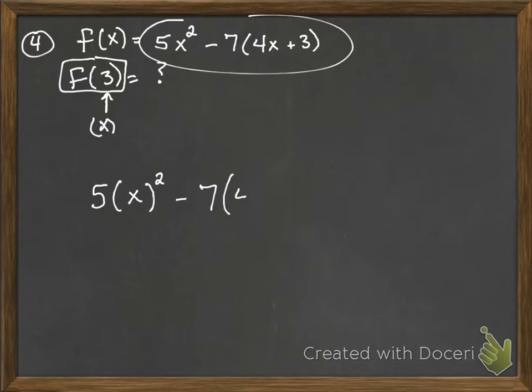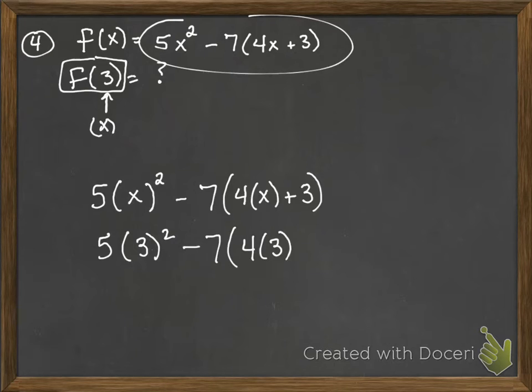So we have this plus 3. Okay, now in place of that x, we're going to put a 3. So, 5 times 3 squared minus 7 parentheses 4 times 3 plus 3.